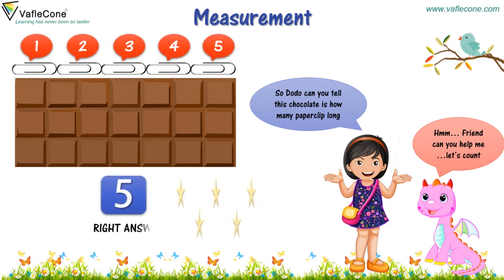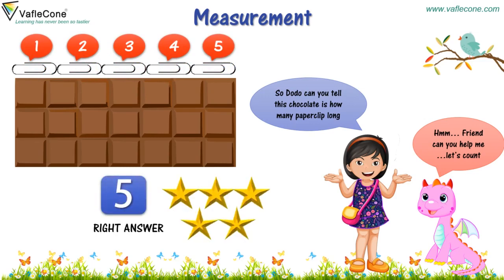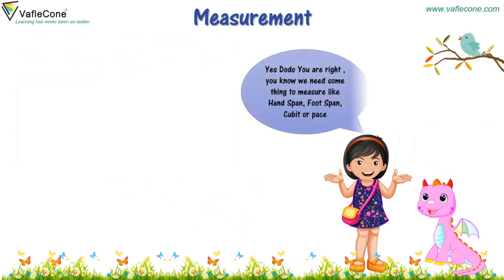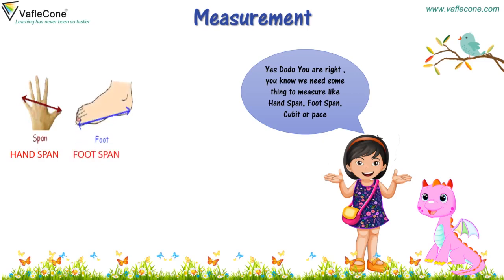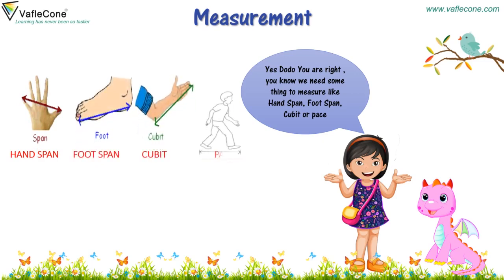Five is the answer! Right answer! Yes, Dodo, you are right! You know, we need some things to measure, like handspan, foot span, cubit, or pace!